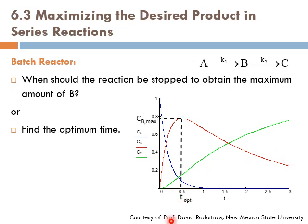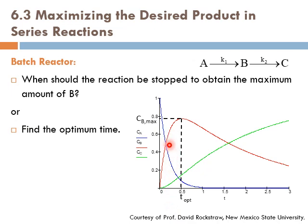There is clearly an optimum time — for example, after half an hour we should stop because that is when we get the maximum concentration of B. If we wait longer, B will be consumed through the second reaction at a rate higher than it is formed. If we choose a lower time, B is still increasing but we have not given it enough time to produce a sufficient amount of B. Mathematically, this optimum point is found by setting dCB/dt equal to zero at the optimum time.